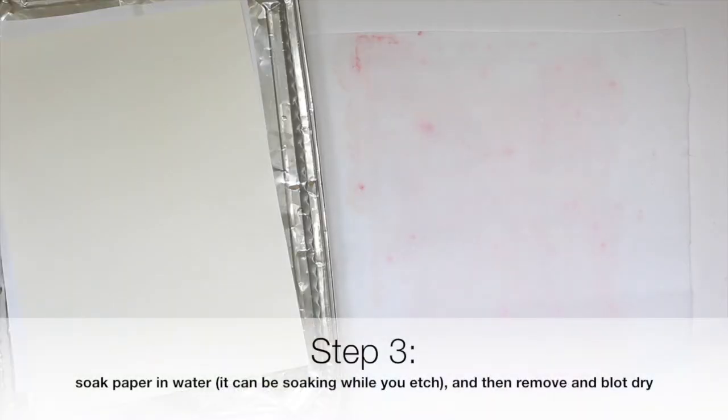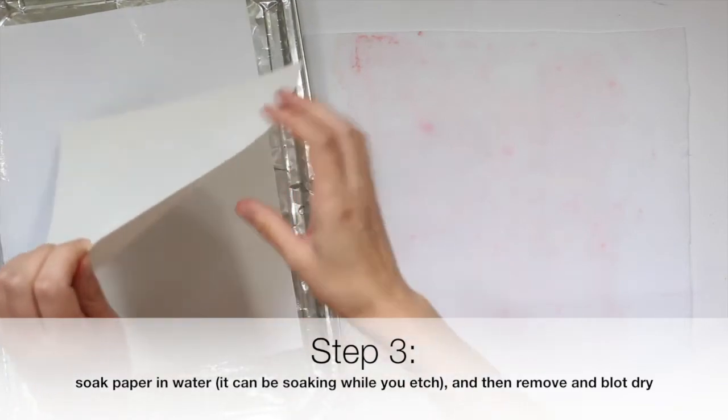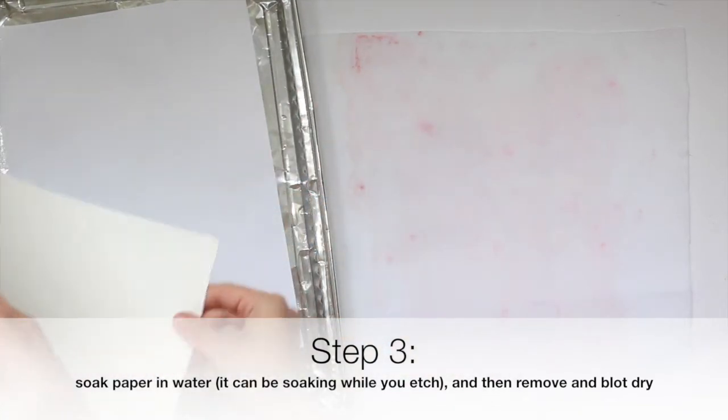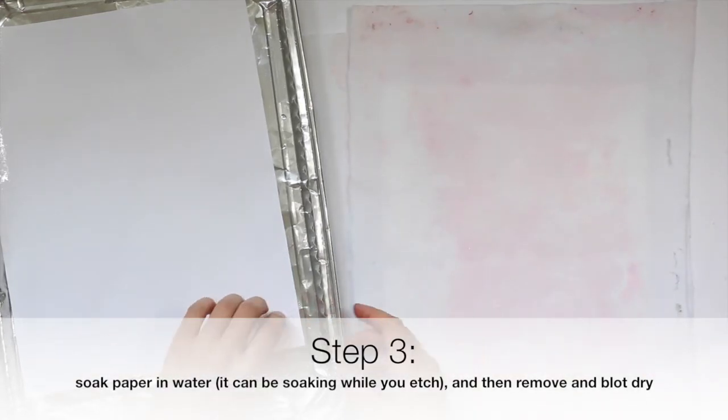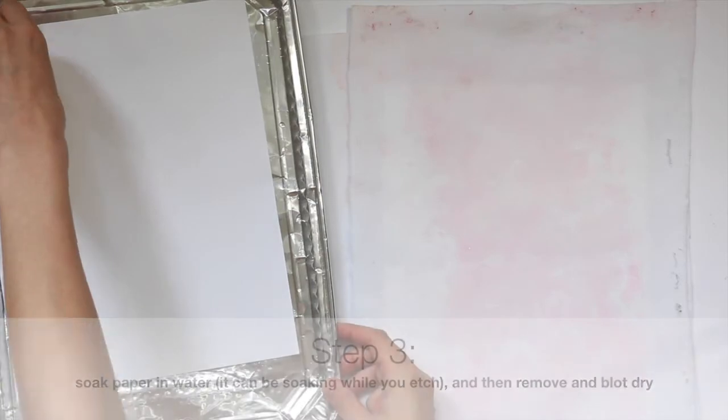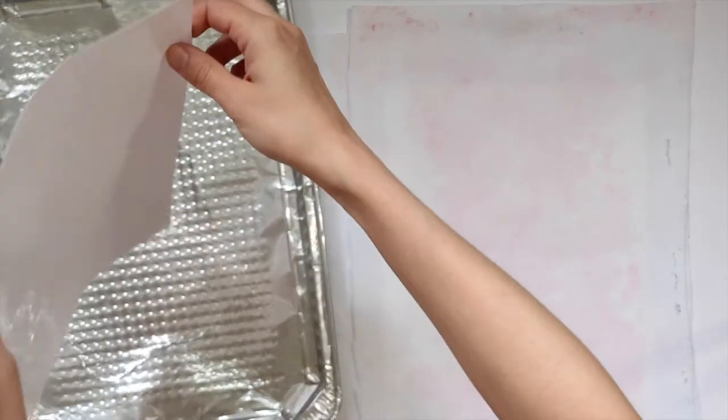I used this foil tray to soak my paper and I'm pulling them out of the water and I'm just going to blot them between these pieces of felt. But you can use paper towels or towels. You don't need a special tray; you can use any dish in your kitchen that's big enough for the size of paper that you want to use.